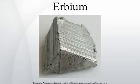Crushed minerals are attacked by hydrochloric or sulfuric acid that transforms insoluble rare earth oxides into soluble chlorides or sulfates. The acidic filtrates are partially neutralized with caustic soda to pH 3–4. Thorium precipitates out of solution as hydroxide and is removed. After that, the solution is treated with ammonium oxalate to convert rare earths into their insoluble oxalates. The oxalates are converted to oxides by annealing. The oxides are dissolved in nitric acid, which excludes cerium, whose oxide is insoluble in HNO₃. The solution is treated with magnesium nitrate to produce a crystallized mixture of double salts of rare earth metals. The salts are separated by ion exchange.